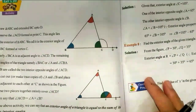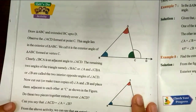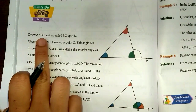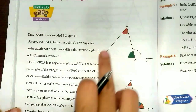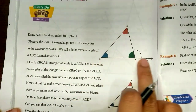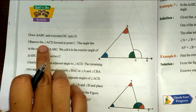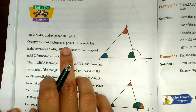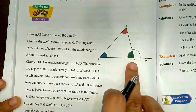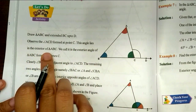Next activity — this is page number 98. Draw triangle ABC and extend BC up to D. This BC is extended to D. Angle ACD is the angle formed at point C. This is the exterior angle of triangle ABC.